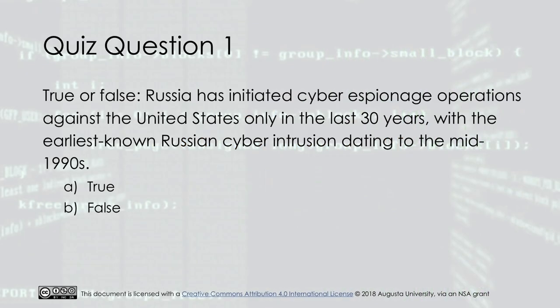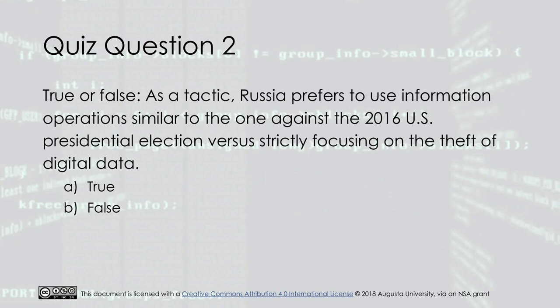Quiz question one. True or false? Russia has initiated cyber espionage operations against the United States only in the last 30 years, with the earliest known Russian cyber intrusion dating to the mid-1990s. The answer is B. False. Quiz question two. True or false? As a tactic, Russia prefers to use information operations similar to the one against the 2016 U.S. presidential election versus strictly focusing on the theft of digital data. The answer is B. False.